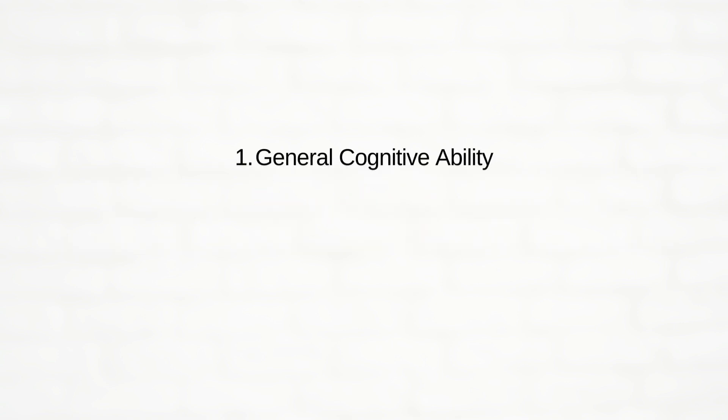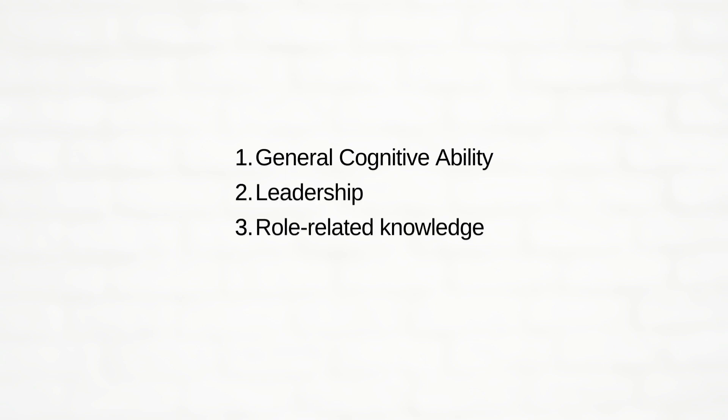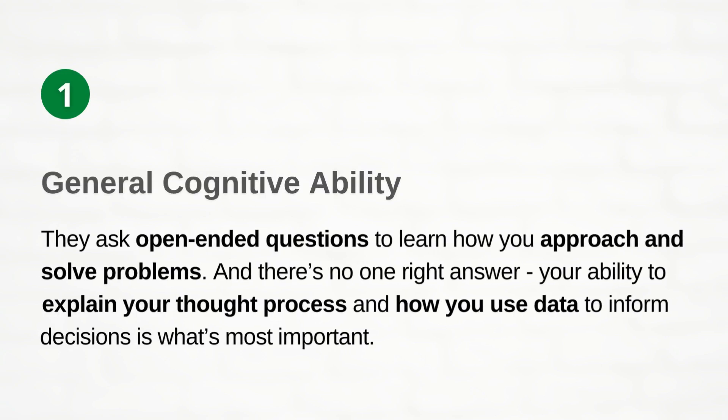So what are the four attributes? General Cognitive Ability, Leadership Skill, Role-Related Knowledge, and Googliness. For General Cognitive Ability, they ask open-ended questions to learn how you approach and solve the problem, and there's no one right answer. Your ability to explain your thought process and how you use data to inform decisions is what's most important.